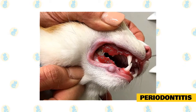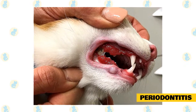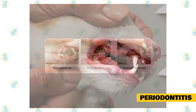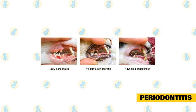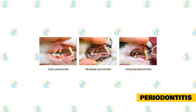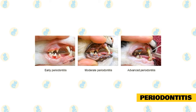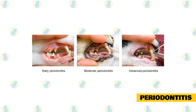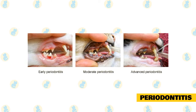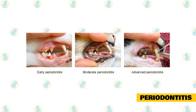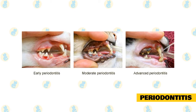Periodontitis is almost always the result of untreated gingivitis, so controlling this inciting process is crucial. Most cats with periodontitis will show signs of gingivitis — redness, swelling, bleeding along the gingiva at the base of the teeth — and may also be reluctant or unwilling to eat, drool, turn their heads to the side when chewing, and develop halitosis.